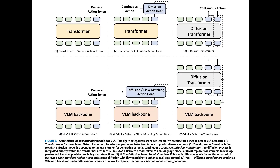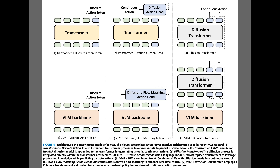Figure 4 maps seven sensory motor architectures that differ in how they turn tokens into robot actions.